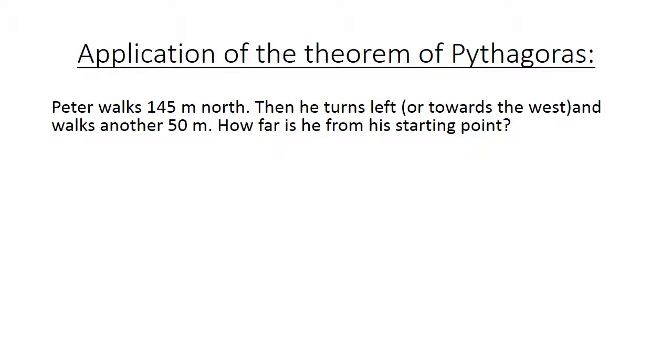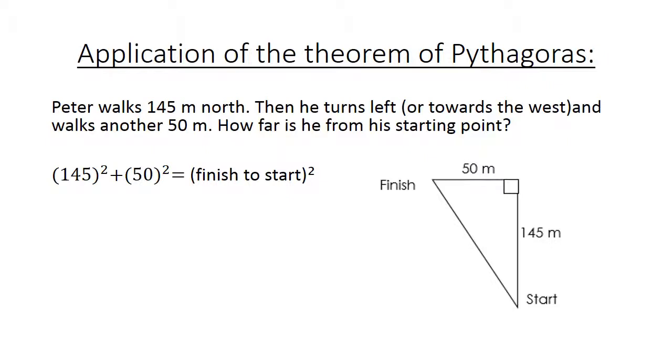The application of our theorem of Pythagoras. Peter walks 145 meters north. Then he turns left, or towards the west, and he walks another 50 meters. How far is he from his starting point?